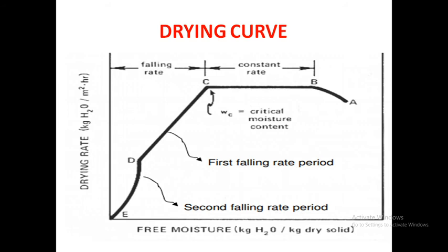First falling rate period occurs when wetted spots in the surface continually diminish, that is reducing, until the surface is dried. The point number D. C to D, this represents first falling rate period.